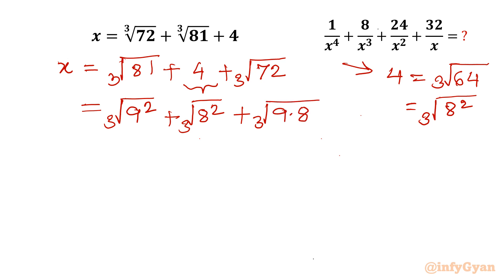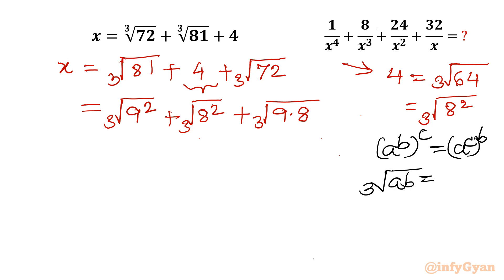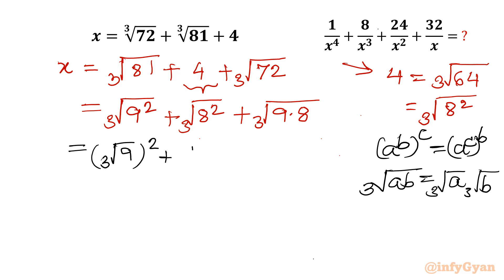Now I will use two exponent properties. First: (a^b)^c = (a^c)^b — we can swap the powers. Second: the q-th root of ab equals q-th root of a times q-th root of b. Applying these, I can write cube root of 8 squared plus cube root of 9 squared plus cube root of 9 times cube root of 8.